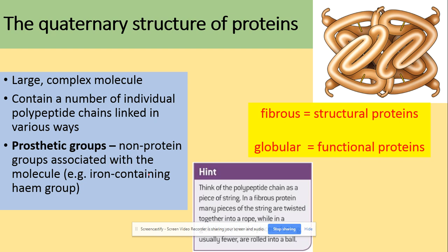For example, in hemoglobin, we've got the heme group. The final form of a protein can be divided into fibrous or globular: fibrous are structural proteins and globular are the ones with specific functions, for example enzymes.